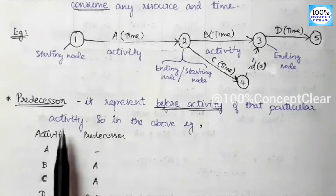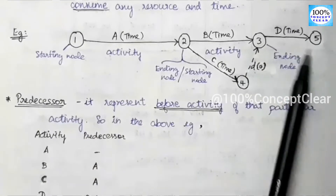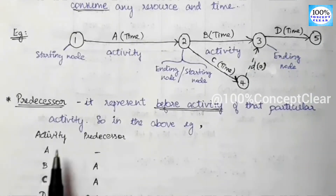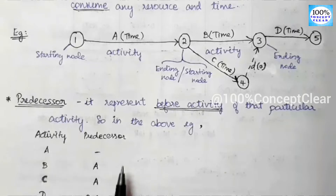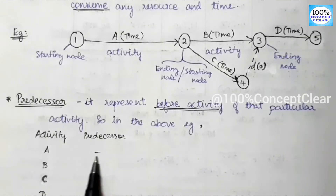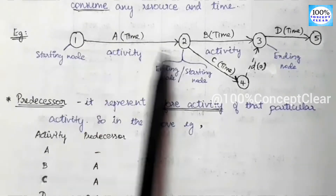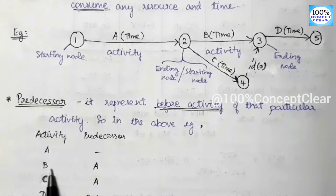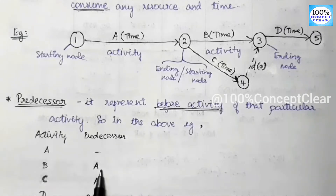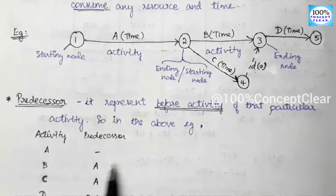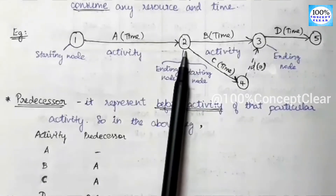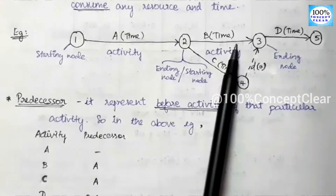For example, consider activities A, B, C, and D. Activity A has no predecessor — it is the first activity. A activity will start first and complete. Then B activity is called after A activity, so A activity must end before B activity starts. Similarly, C activity also calls A activity as its predecessor. A activity completes at the second node, and then B and C activities can start from that node.